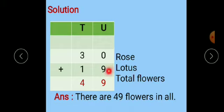Now we start addition from the units place. 0 plus 9 is 9 here. Now it is a one digit number, so no need to carry one or carry anything to the tens place. Now 3 plus 1 is 4. The answer is 49, and 49 is the total flowers. Then the final answer is there are 49 flowers in all.